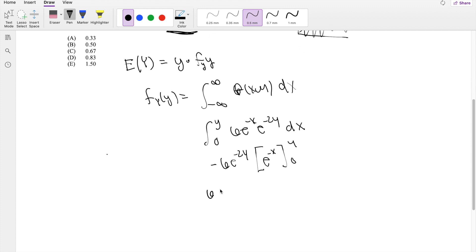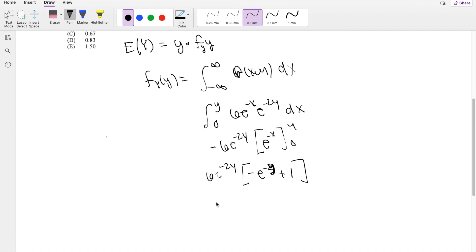When I plug in the upper limit here of y, you get negative e^(-y) minus negative, that's positive. e^0 is just 1. Multiplying by 6e^(-2y), you get 6e^(-2y) minus 6e^(-3y).